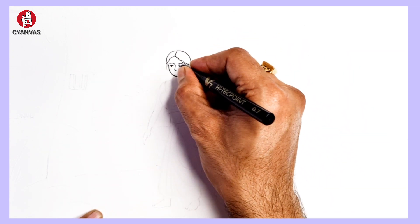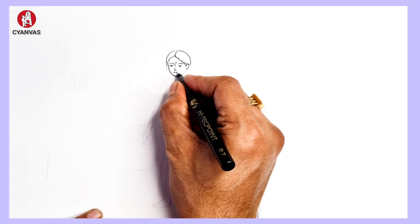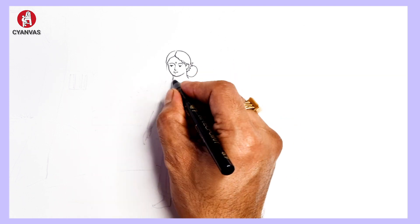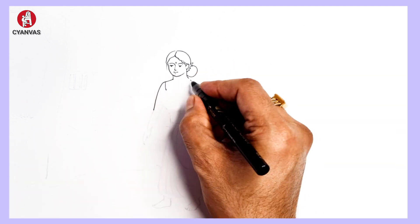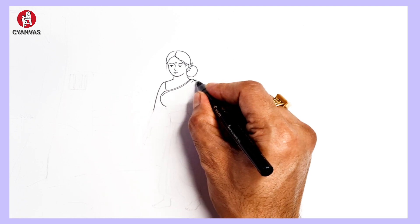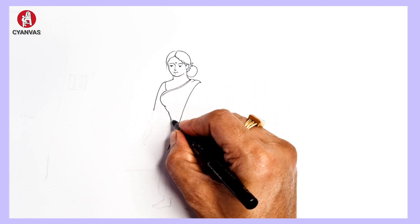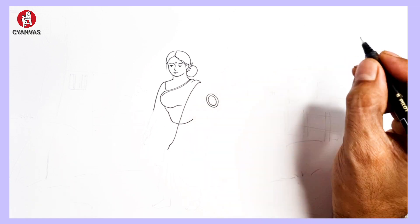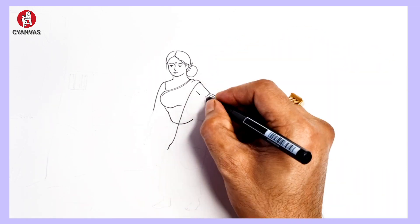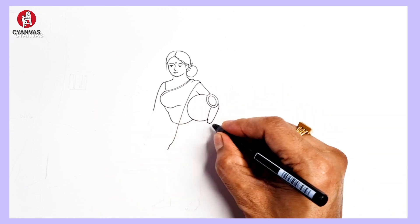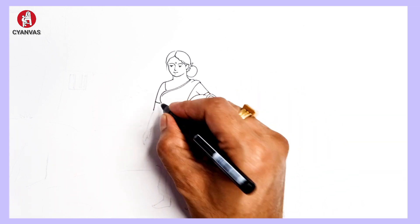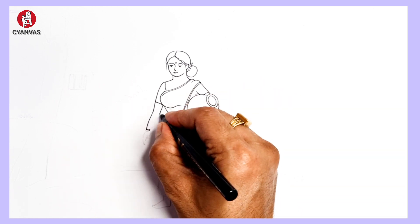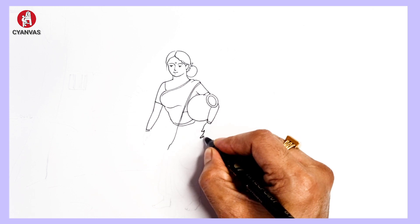We'll draw a lady first. See the lady's drawing — how you draw the lady. At first you have to know from where you should start. You have to complete her head first, then you will draw her body, then you will draw all parts gradually.